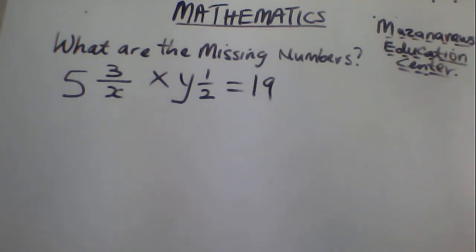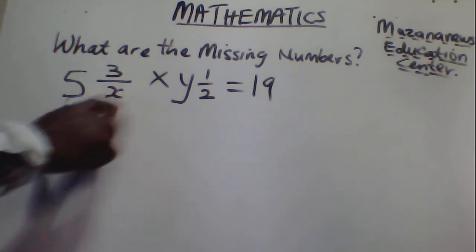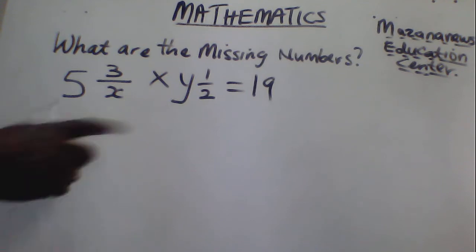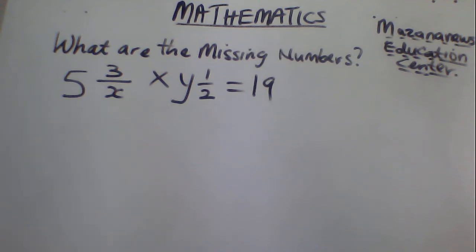Good day student. As you can see, one of my students sent this problem to me. He said it is difficult to get the value of x and y. This is a type of problem you usually see in fractions. You are required to find x and y so that the equation — the left hand side — will be equal to the right hand side, which is 19.